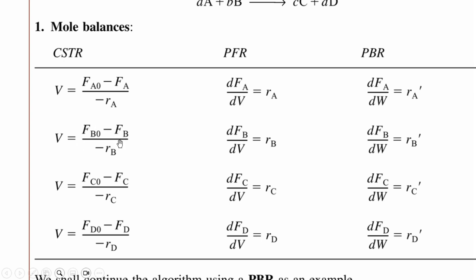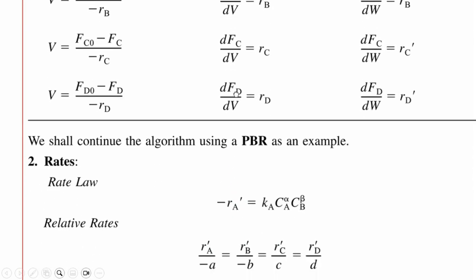For B, (FB0 - FB)/(-rB), dFB/dV = rB and dFB/dW = rB', and in the same way for C and D as well.